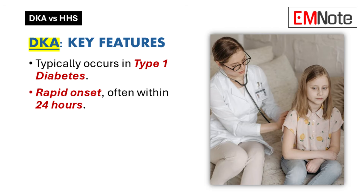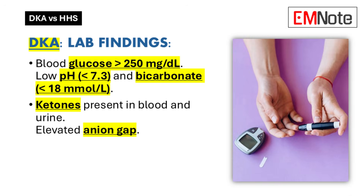Let's start with DKA. This typically occurs in type 1 diabetes. Without insulin, the body turns to fat for energy, which is where ketones come in. Those ketones build up and lead to metabolic acidosis — hence the name diabetic ketoacidosis. DKA usually has a rapid onset, often within 24 hours. You'll see blood glucose above 250 mg/dL, low blood pH below 7.3, low bicarbonate below 18 mmol/L, high ketones in blood and urine, and an elevated anion gap.